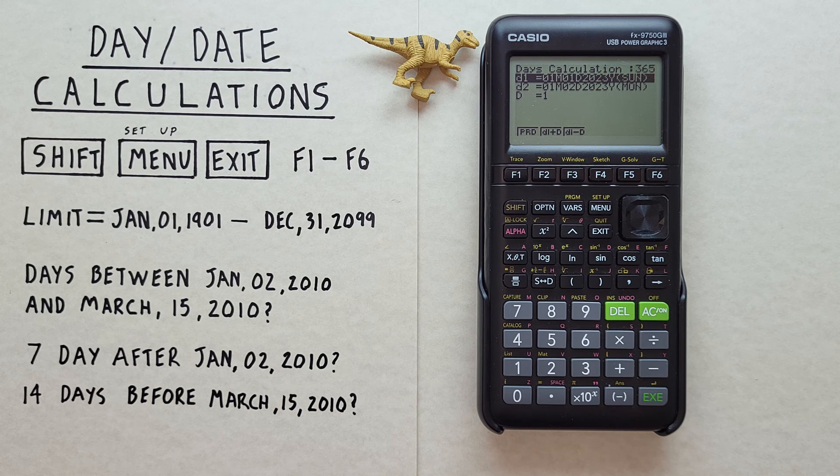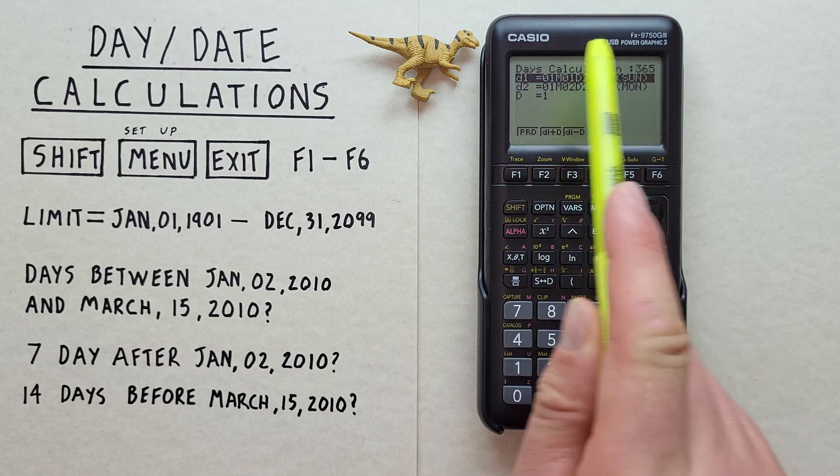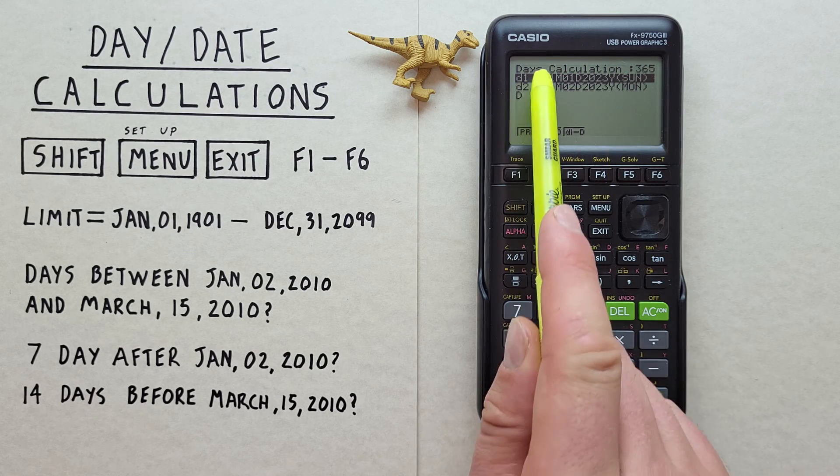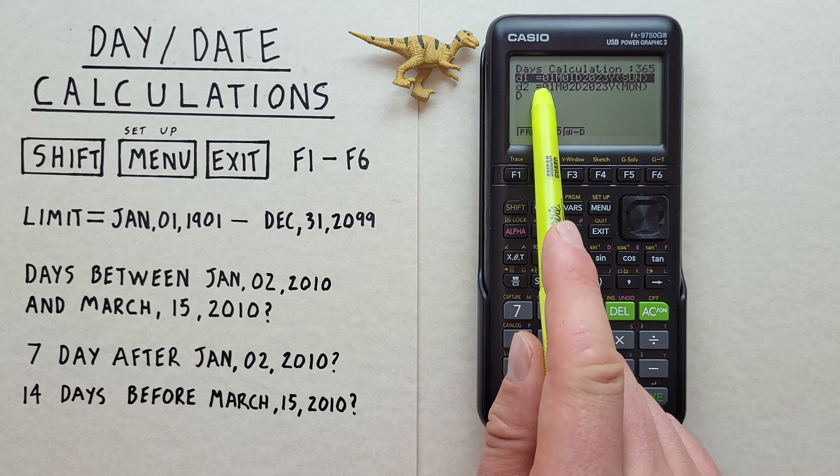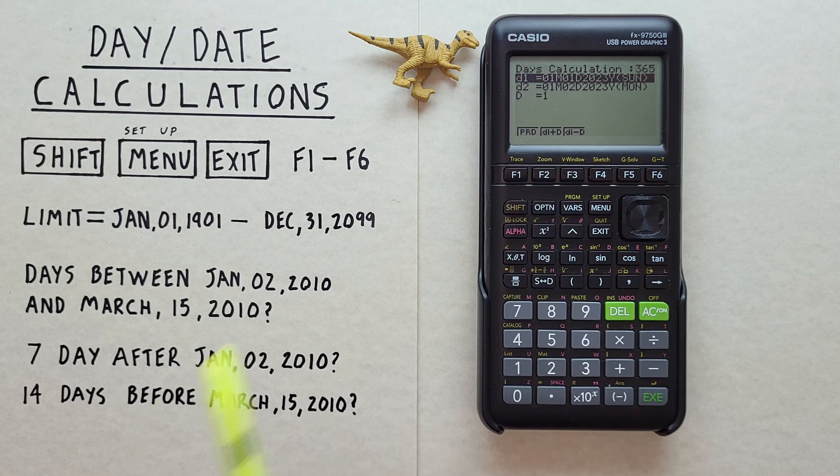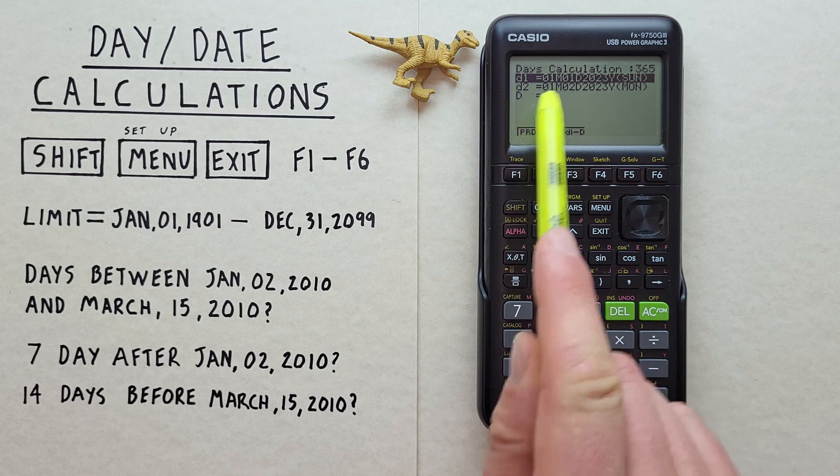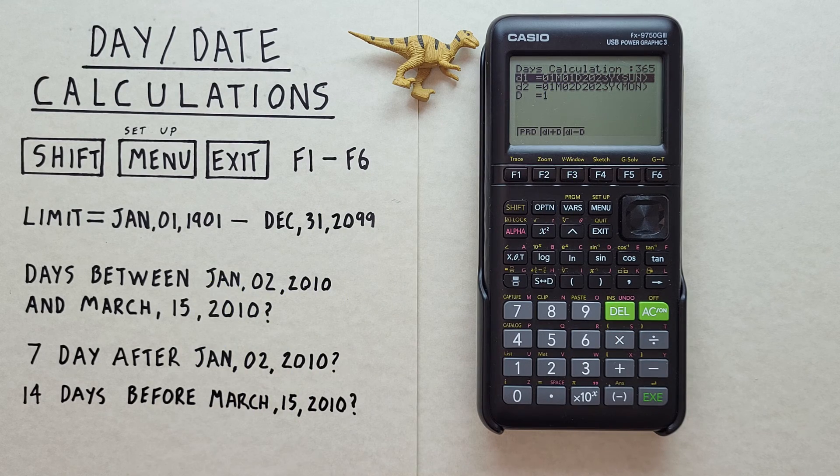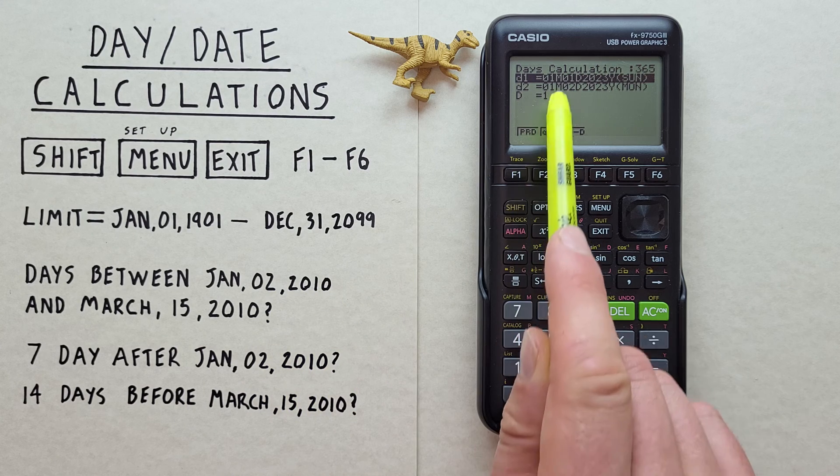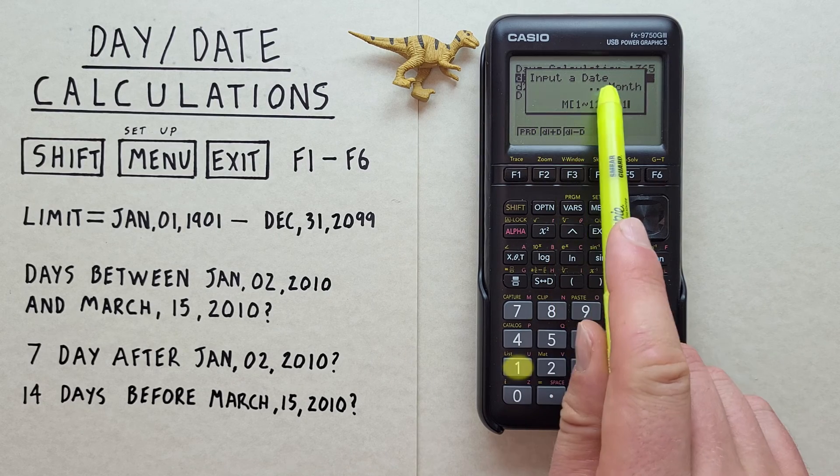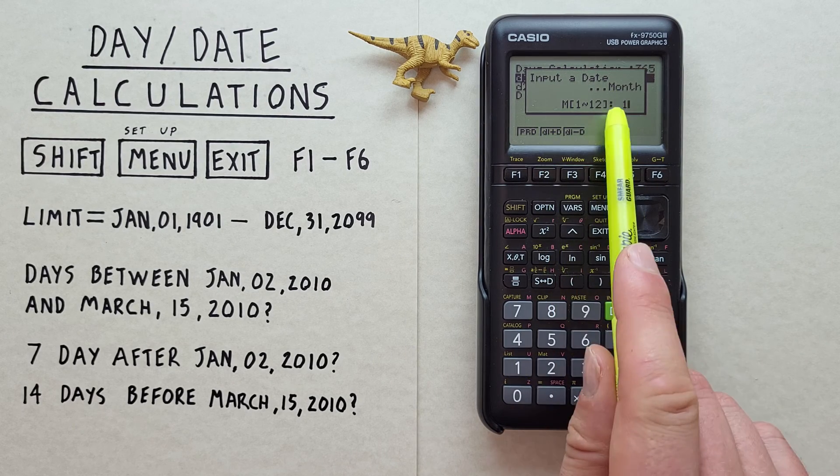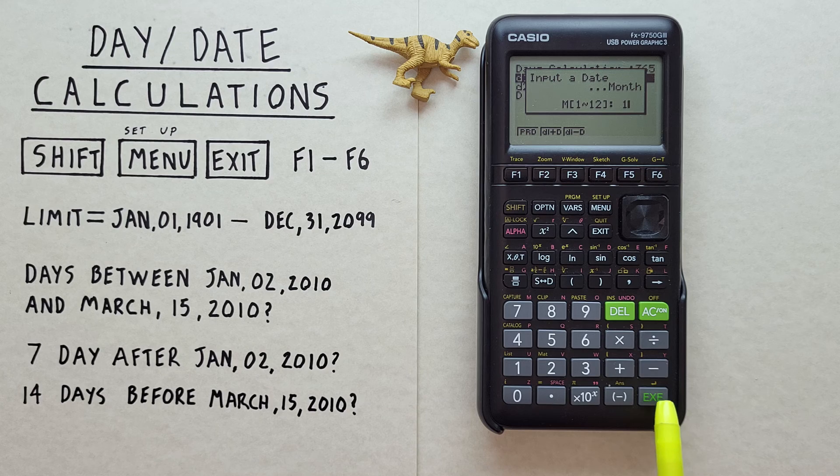To do that from our day calculation app. First, we need to set our D1, which is our start date and our D2, which is our end date. So we highlight D1. And then we can just start entering our date. So we have January 2nd 2010. And we can just start with the month, which is one for January. There we go. Input date, month, one for January. Hit EXE.